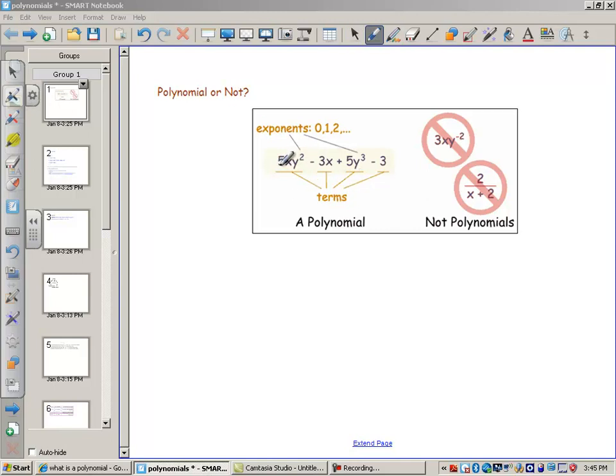So here we've got a polynomial. We've got the coefficient of 5. We've got an exponent of 2. This has an exponent of 1. There's nothing wrong with that. The second term has a coefficient of -3 actually. So we're looking at a polynomial here. It's four terms.